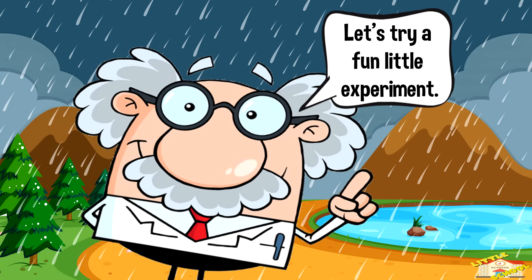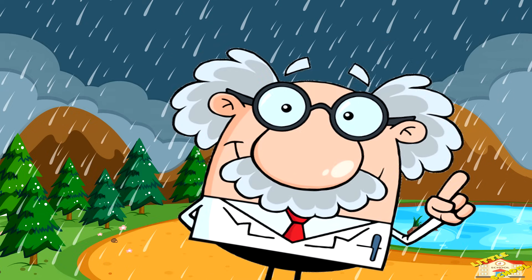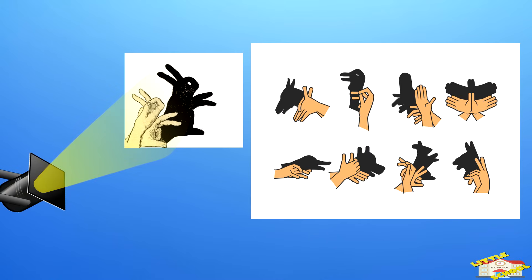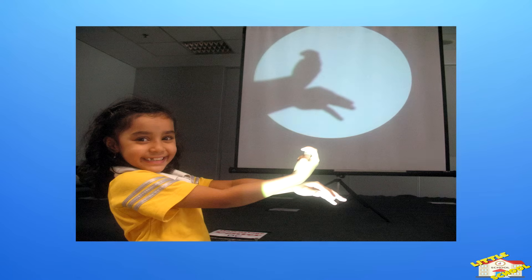Let's try a fun little experiment! You can try making shadows with your hands in front of a light, like making a dog or a bird shape with your fingers. This is called shadow puppets, and it's a fun way to see how shadows work.